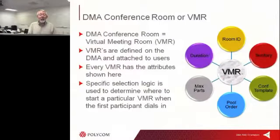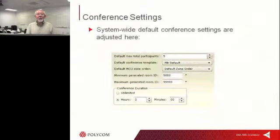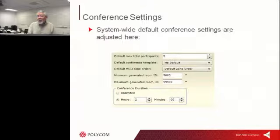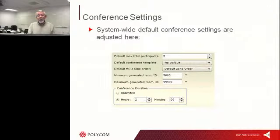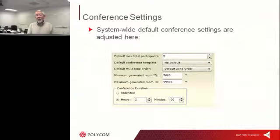The bridge doesn't have to know anything about what's coming, because it'll be told on the conference setup exactly how to set it up. For conference settings, a maximum number of endpoints can be configured, such as five. Some customers may have many small conferences rather than large ones. For example, one large company had about 140 endpoints worldwide and rarely had a bridge call with more than five sites, but would have 10 or 15 of those bridge calls going on at any point in time.